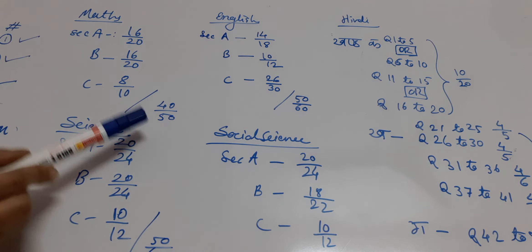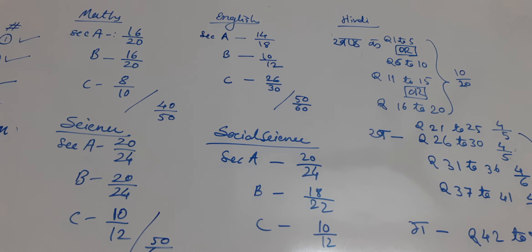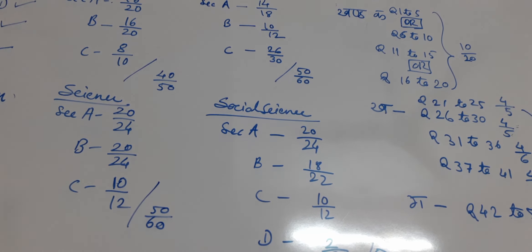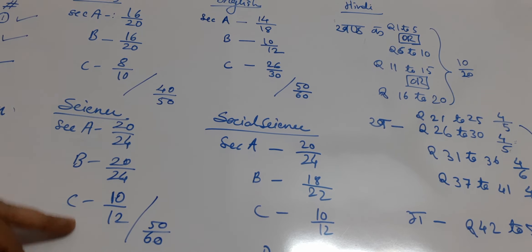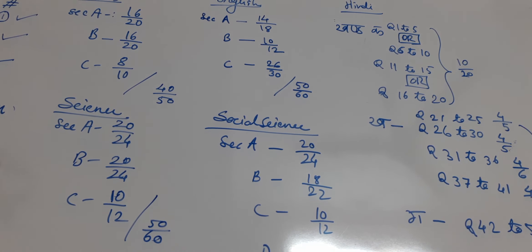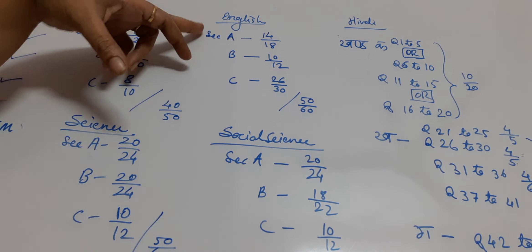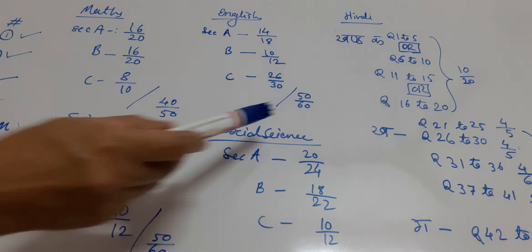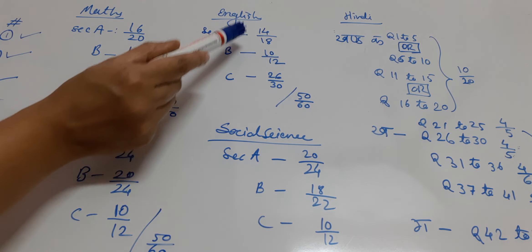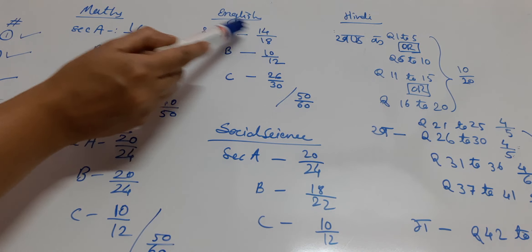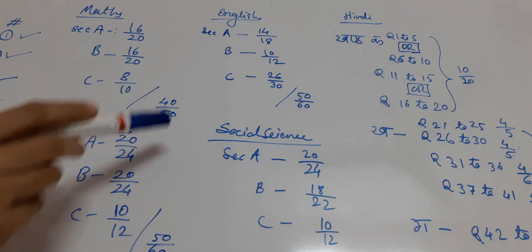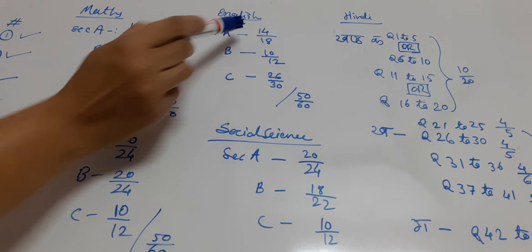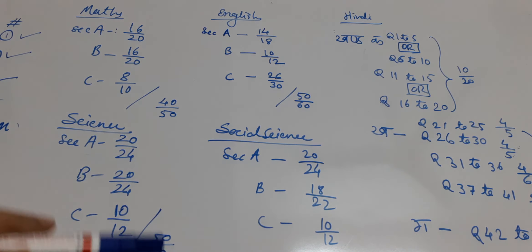In maths, total 50 questions are there, out of which 40 questions you need to solve, section-wise. In science, total 60 questions are there, out of which 50 you need to solve, and you need to solve them section-wise. If any answer you are doubtful about, write it as unattempted. In the first section, total 18 questions are there and out of those any 14 you can attempt — but if you attempt all, only the first 14 attempted questions will get evaluated.